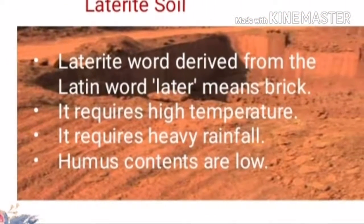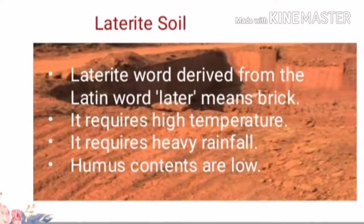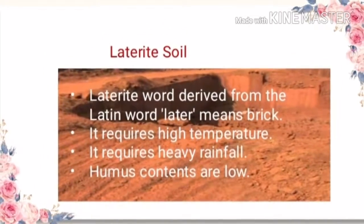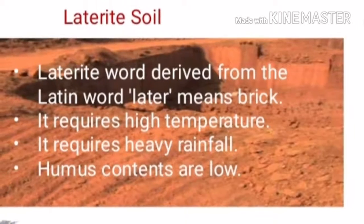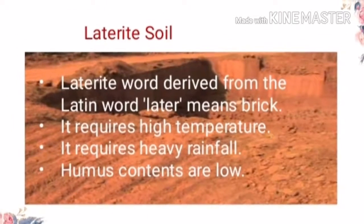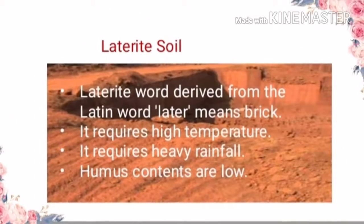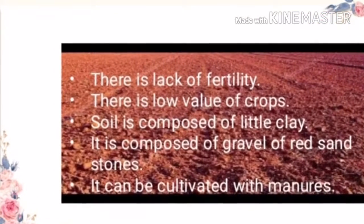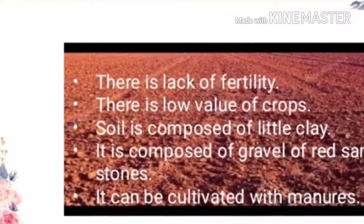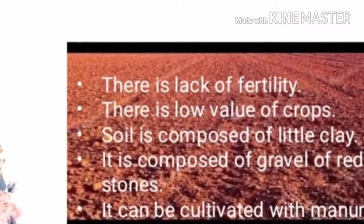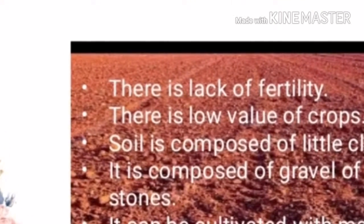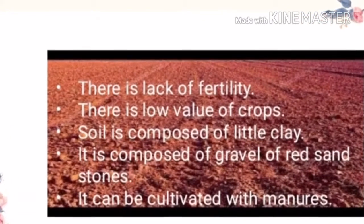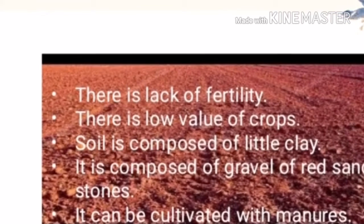Next is the laterite soil. Laterite has been derived from the Latin word 'later.' It dwells in areas where there is high temperature and heavy rainfall. Humus contents are low, and there is a lack of fertility in the soil. They are composed of little clay and gravel of red sandstone. This soil is suitable for cultivation only with manures and fertilizers.